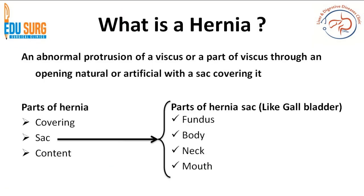So what is a hernia? It is an abnormal protrusion of a viscus or a part of viscus through an opening which may be natural or artificial — basically post-surgical — with a sac covering it. This is a very commonly asked question, so remember the definition well.